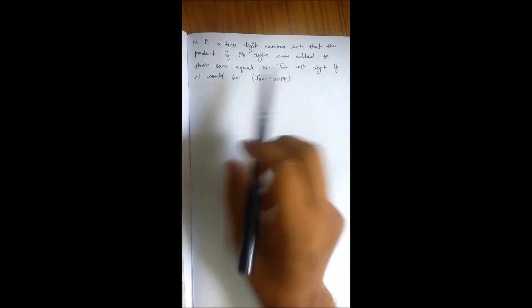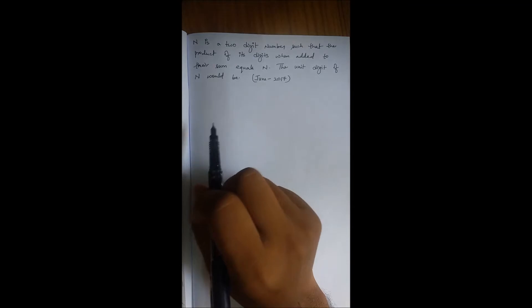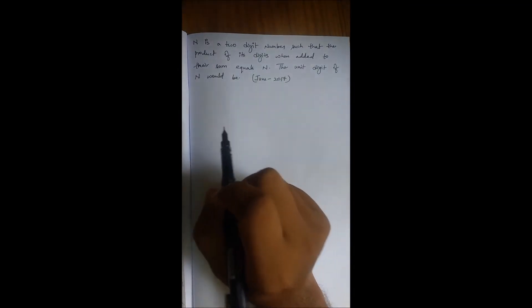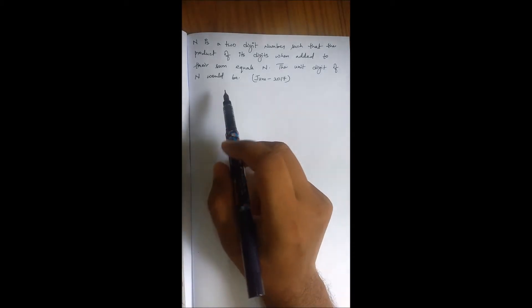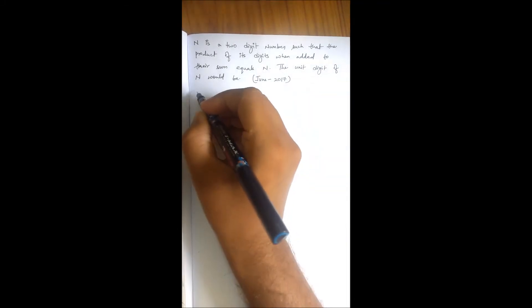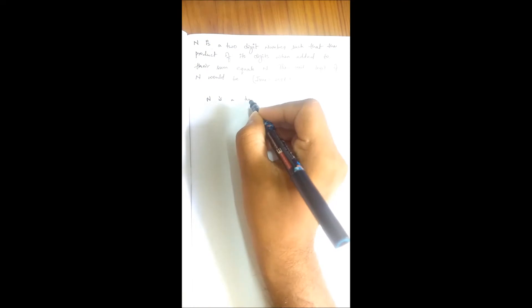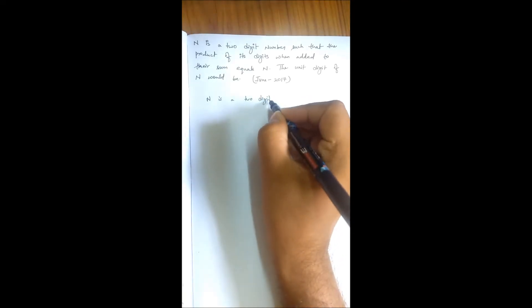So the unit digit of the number would be what we have to find out - the unit digit of this two-digit number. The basic idea behind this question is very simple. As you can see, it is given that N is a two-digit number.